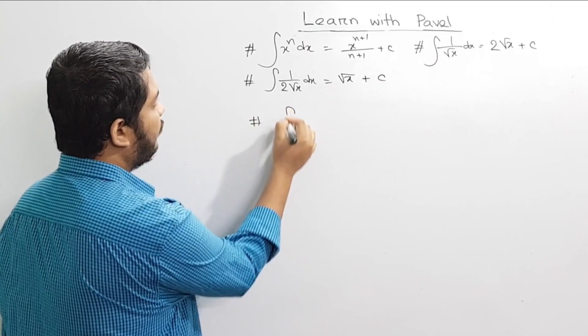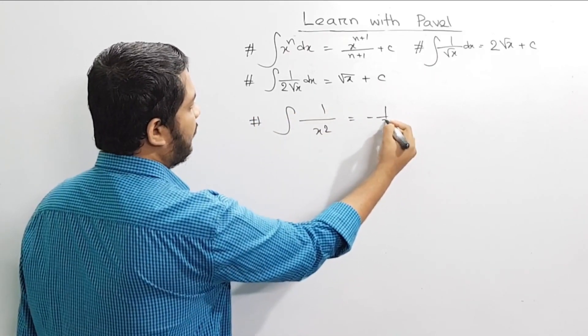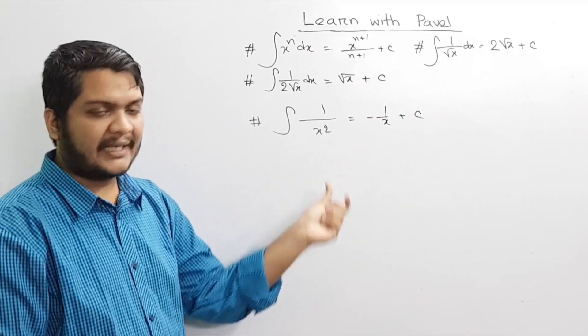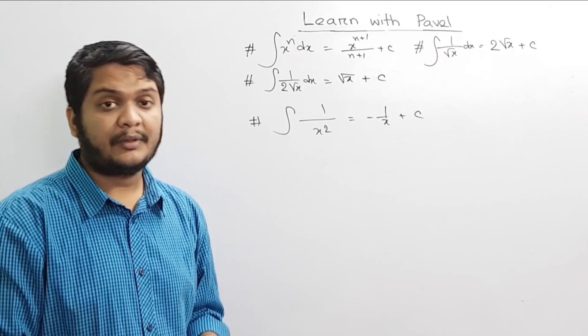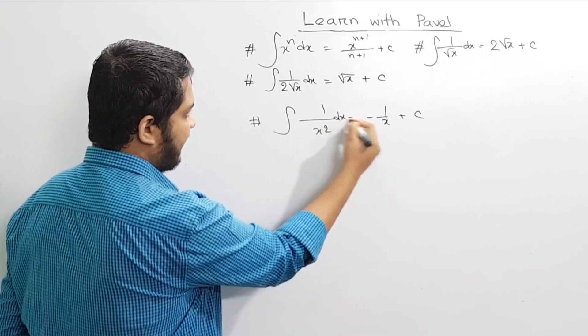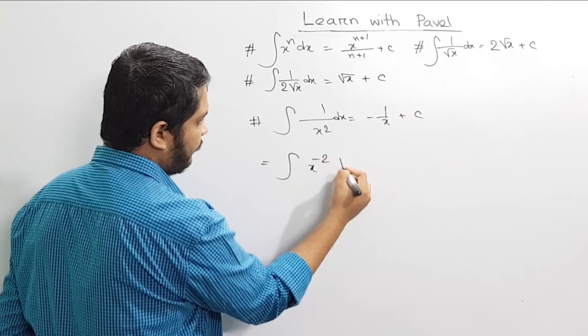This is the integration of 1 by x square equals minus 1 by x plus c. We'll prove this formula. You can use the formula directly, but let me show the proof. We can rewrite this as the integration of x to the power minus 2 dx.